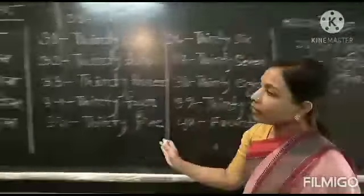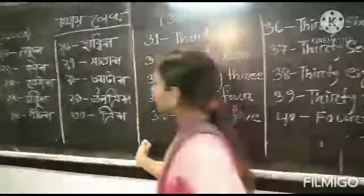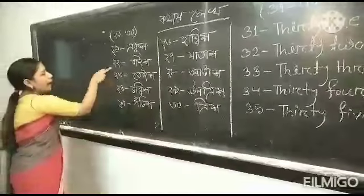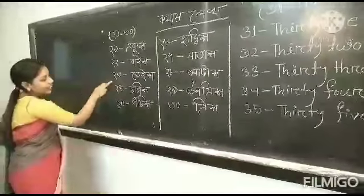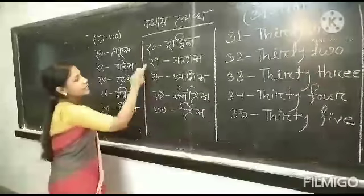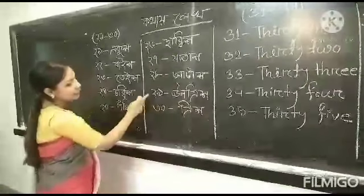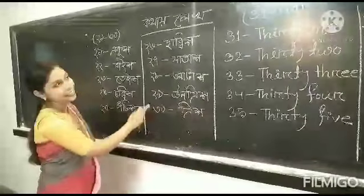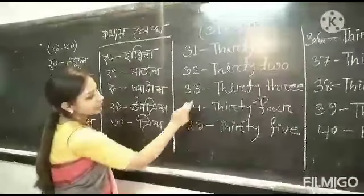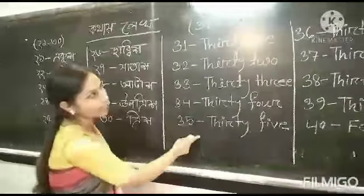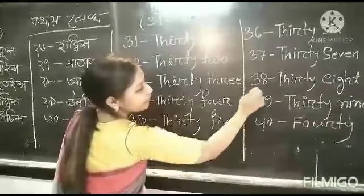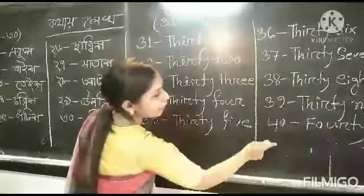Now let's take a look at the first step. 1, 2, 3, 4, 5, 6, 7, 8, 9, 10. 31, 32, 33, 34, 35, 36, 37, 38, 39, 40.